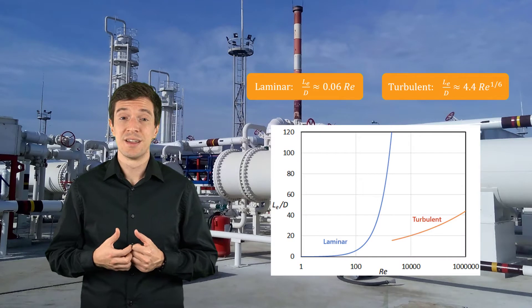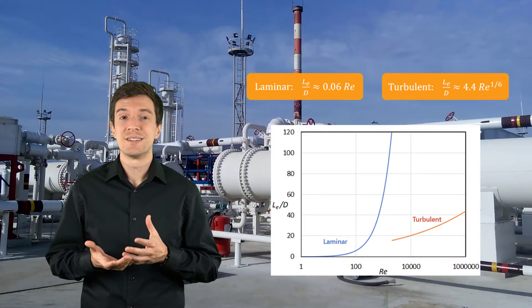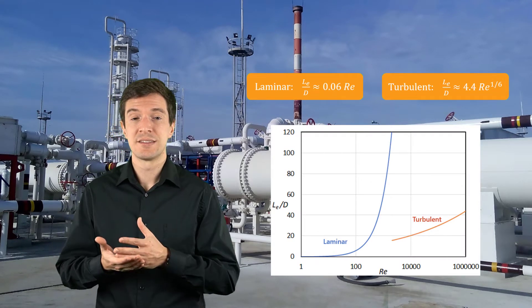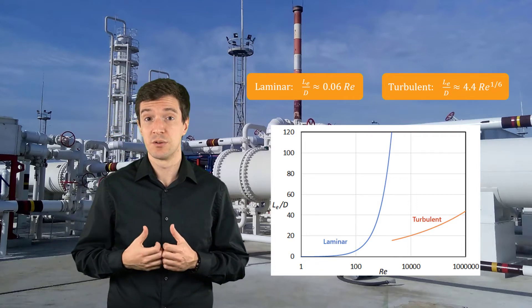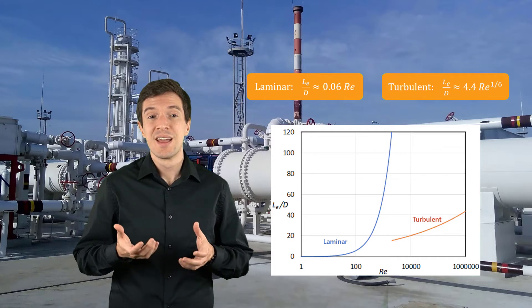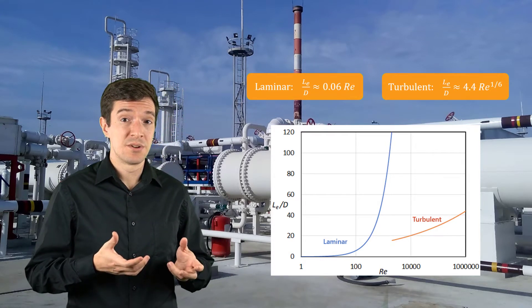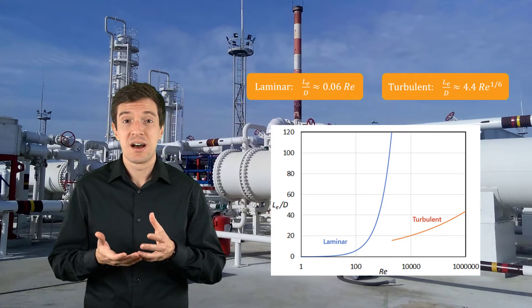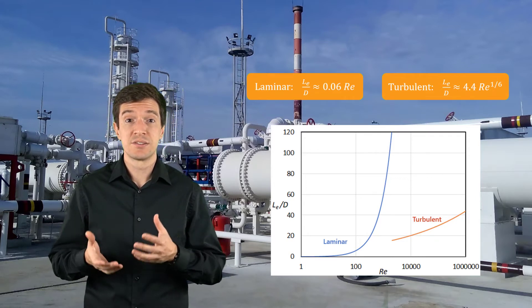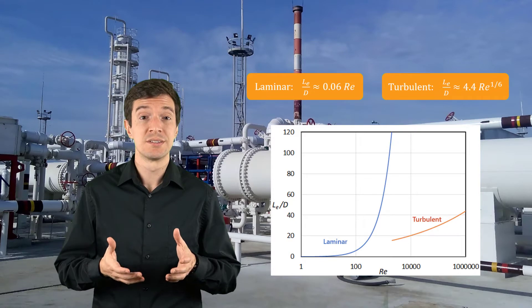Reported here in this plot, we can see how the entrance length varies with Reynolds number for the laminar and the turbulent flows. For large Reynolds numbers, we can have the entrance length that can be several hundreds of pipe diameters long.